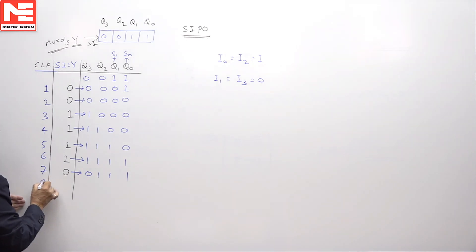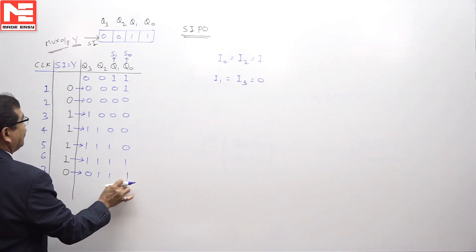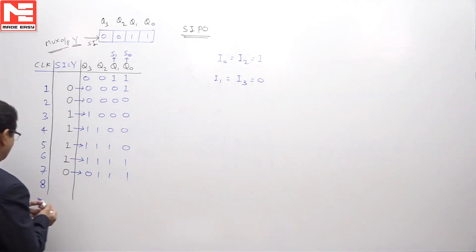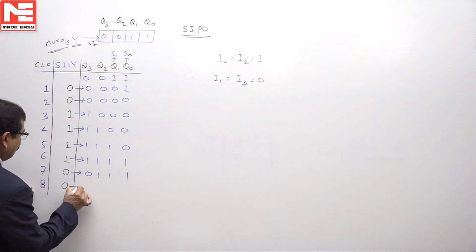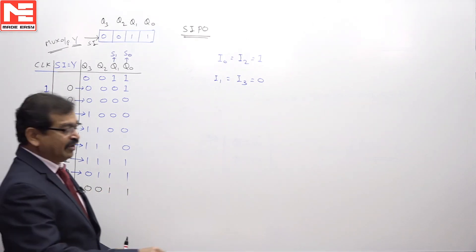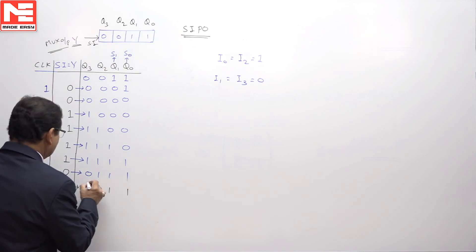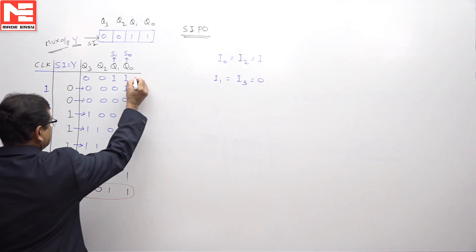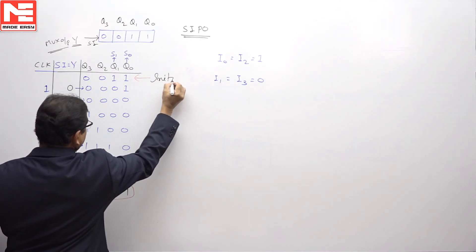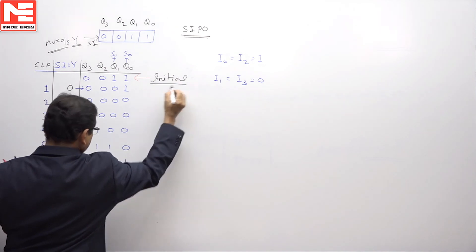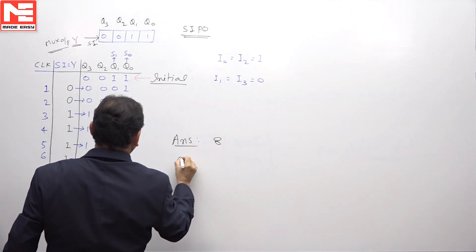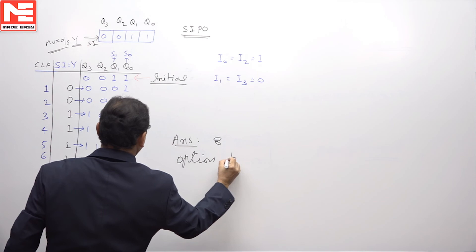Before the eighth clock pulse, S1 and S0 are 1 and 1, so the selection from the multiplexer is again for line 3, which is connected to 0. After applying the eighth clock pulse, the content in the register becomes 0, 0, 1, 1, which is the initial content. The circuit has returned to its initial state after 8 clock pulses. Therefore, the answer to this question is 8, which corresponds to option B.